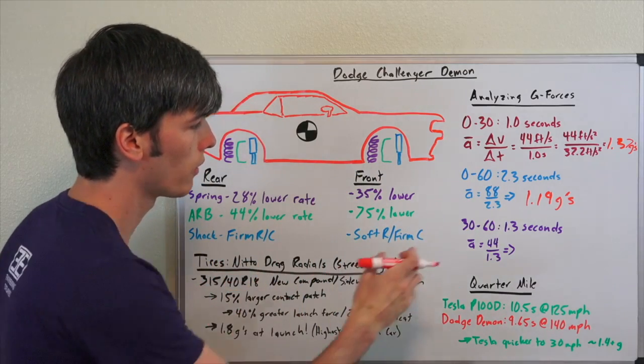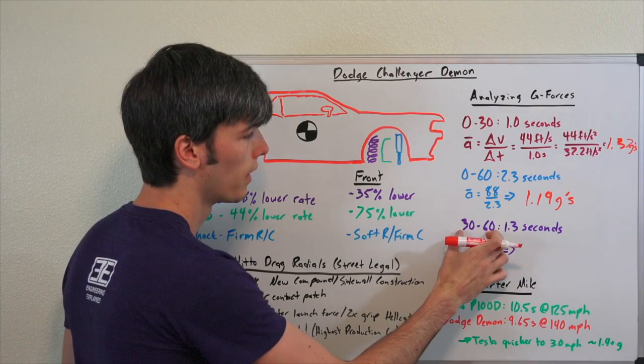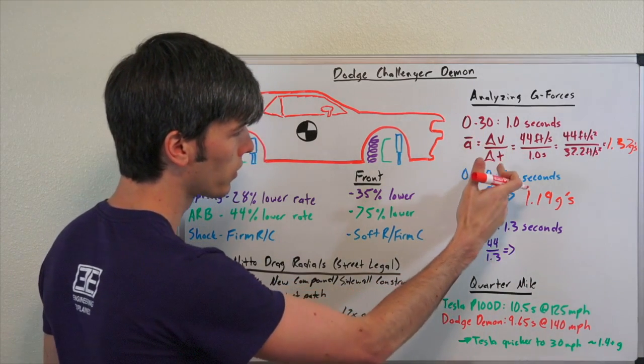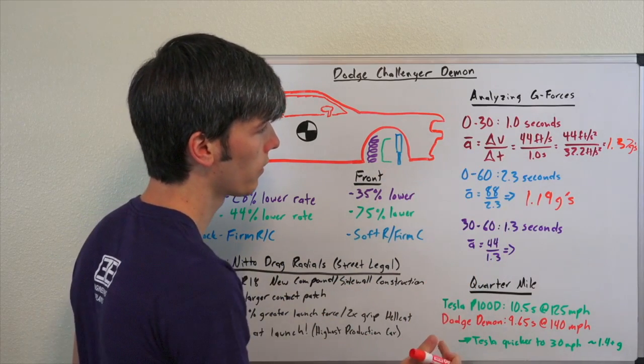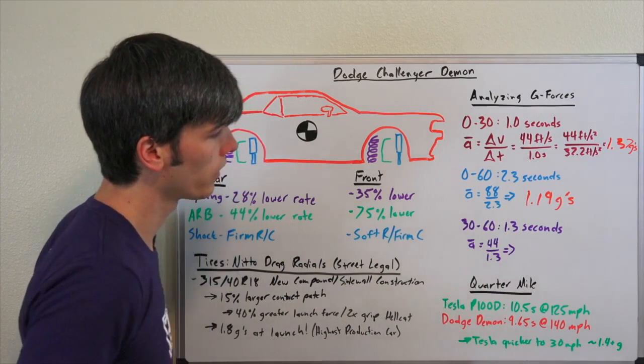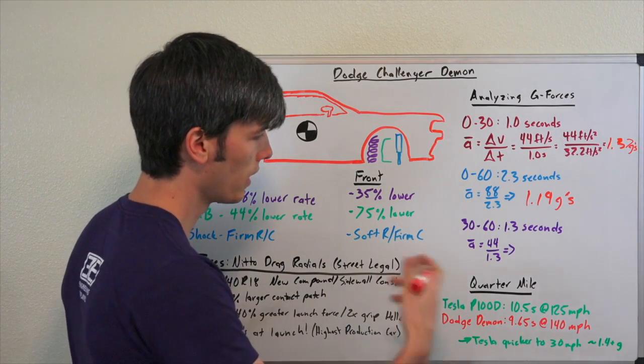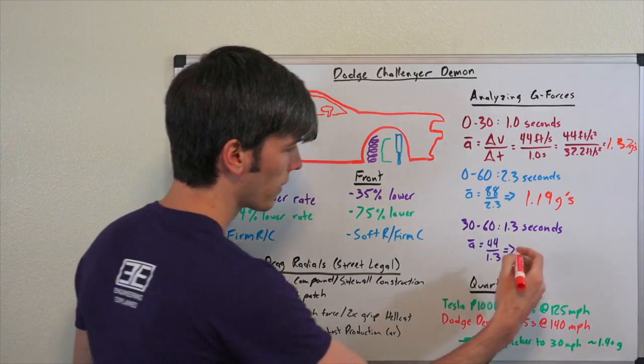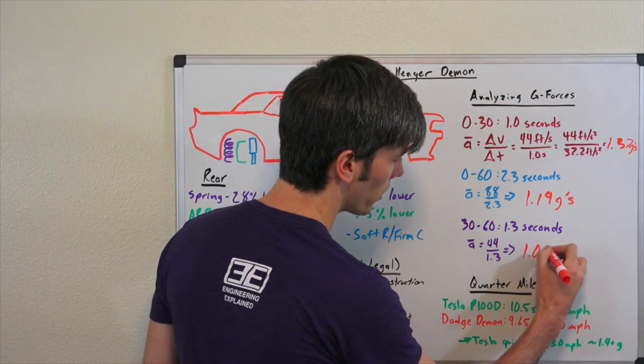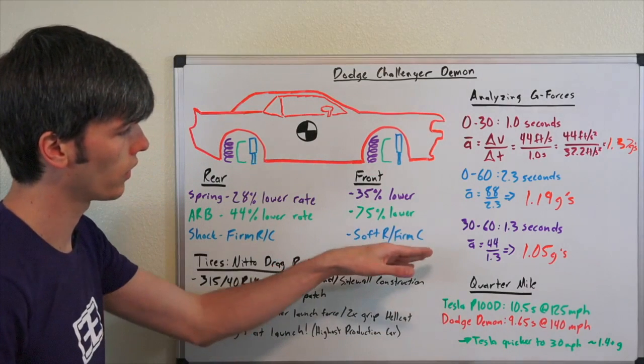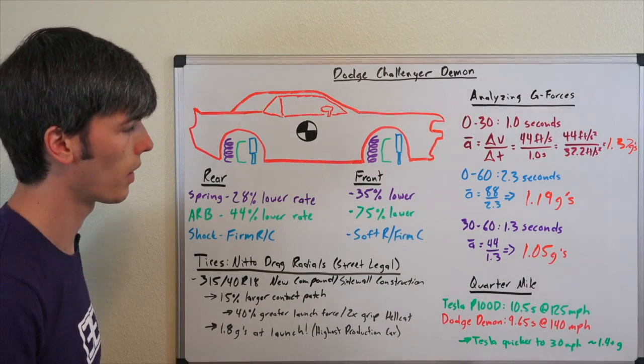Excluding that rollout. Well, if we look at the 30 to 60 time, that's not going to have any rollout included in it. It's able to do 60 in 2.3, 30 in 1. Subtract the difference is 1.3 seconds. So if we do the math, 44 feet per second in 1.3 seconds, that's going to give us a G-force of 1.05 G's. That's the average G-force that the car is accelerating from 30 to 60 miles per hour.